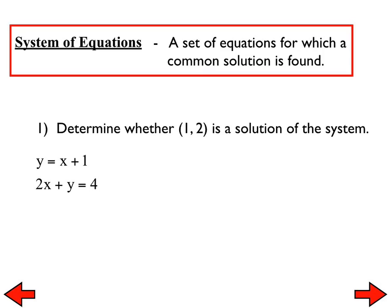So first problem: determine whether (1, 2) is a solution to that system. Any ideas on how we might go about doing that? When we have an ordered pair, the first number — the input — is an x value, and the second number is the output, which is a y value. So let's plug 1 in for x and 2 in for y and see if that makes a true statement. If it makes a true statement in both of them, then it is a solution. But it has to make a true statement in both of them. Sometimes the ordered pair is small enough that you can test it in your head; other times you may have to do a little work on the side.